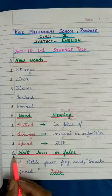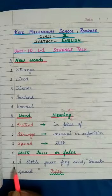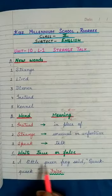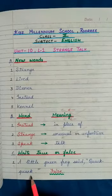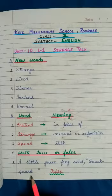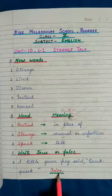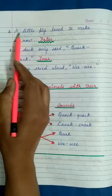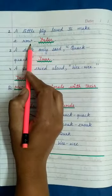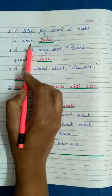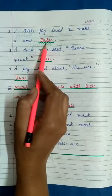Now we come to Part C: Write True or False. The first one is: A little green frog said Quack, quack. Ek chote green frog ne kaha Quack, quack. Yeh sentence galat hai, isliye humne False likhaye. Second: A little pig loved to make a row. Ek little pig line mein chalna pasand karta tha. Yeh sentence galat hai, isliye humne False likhaye.